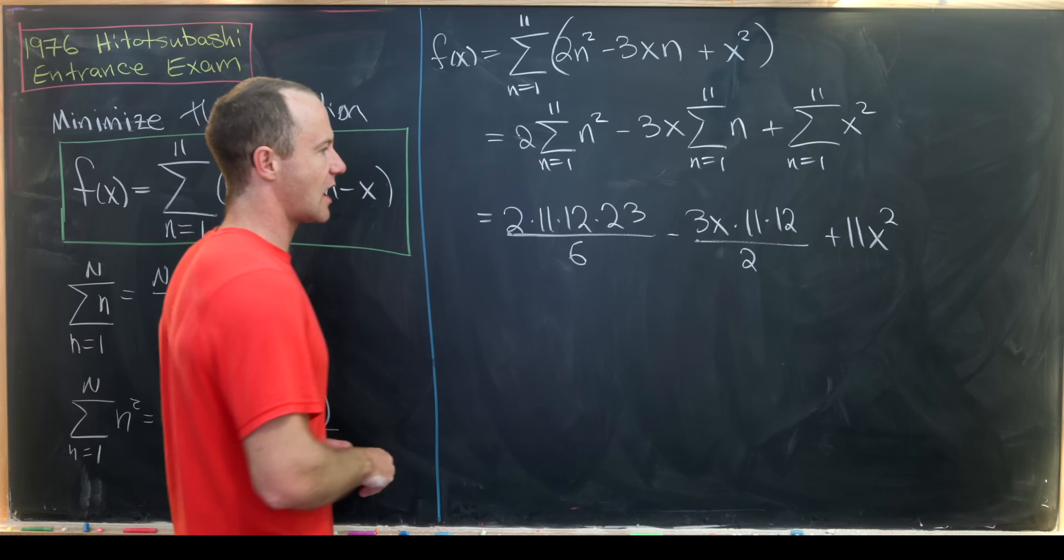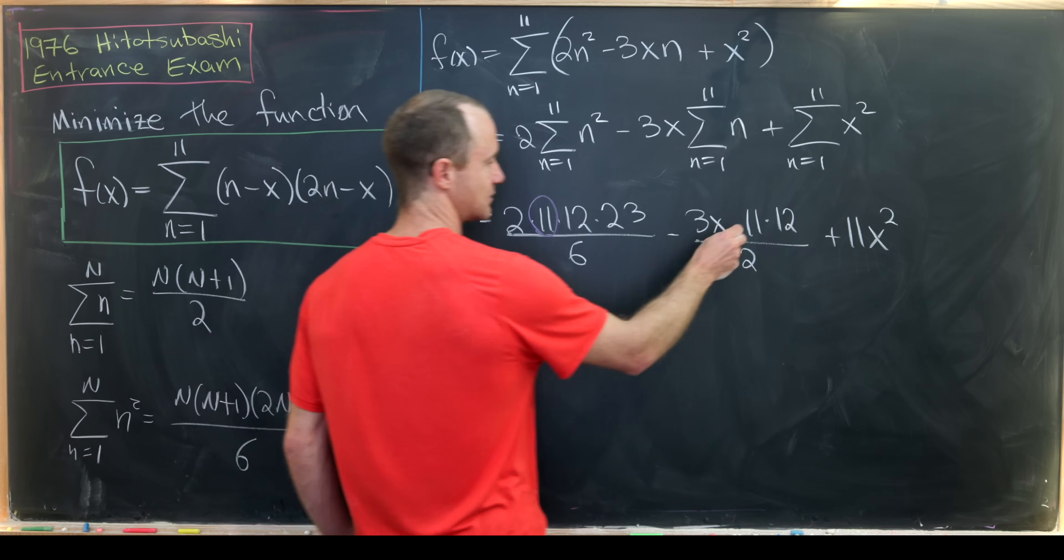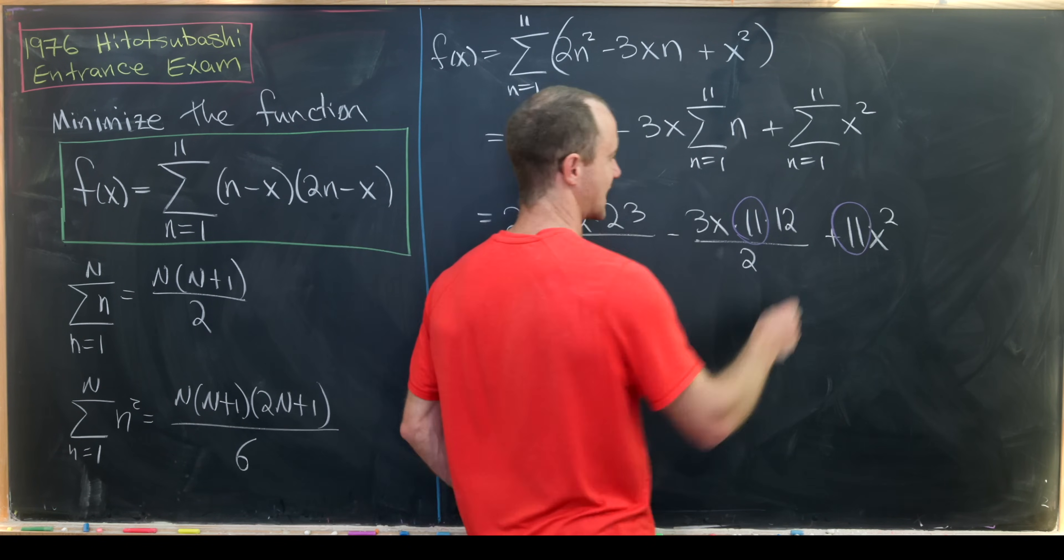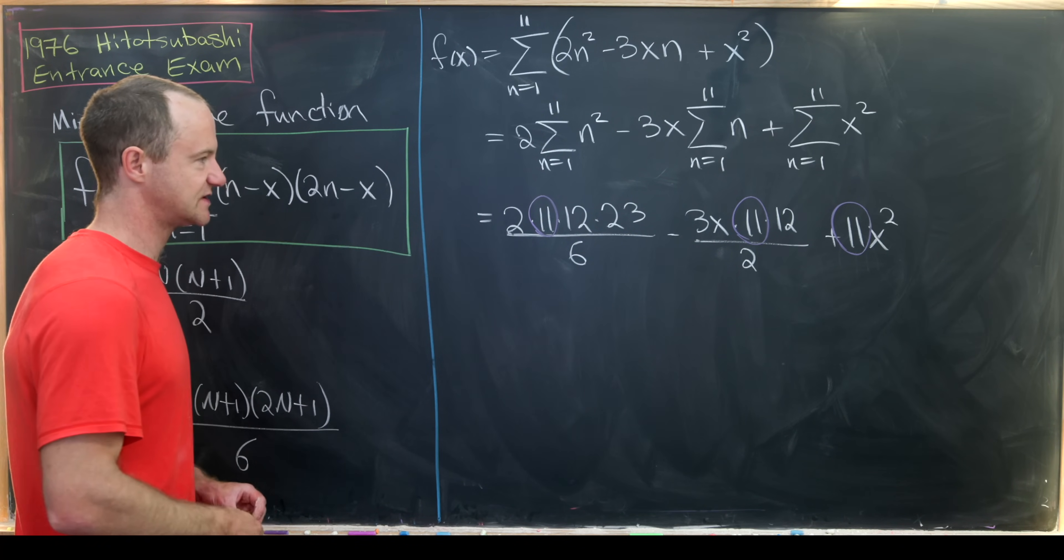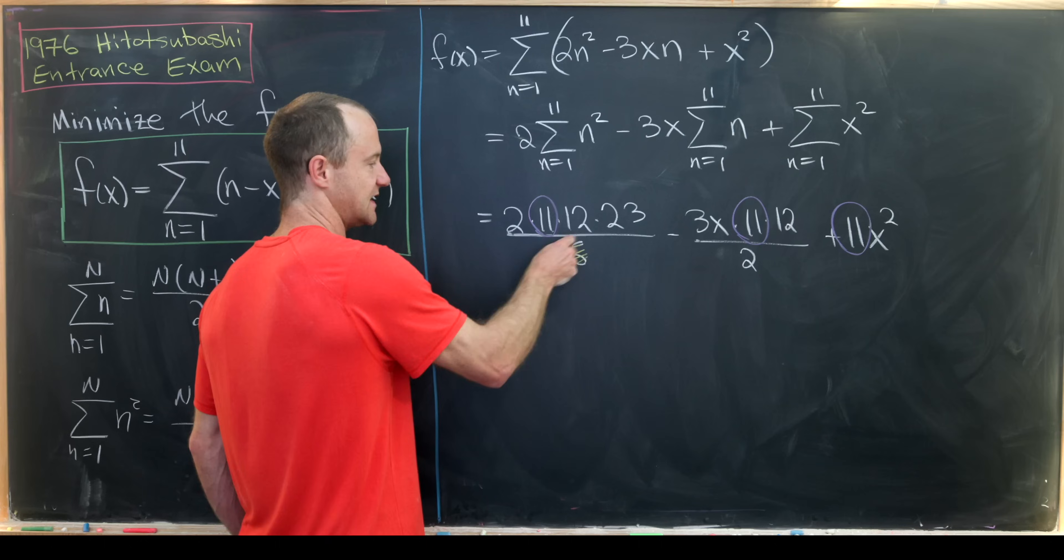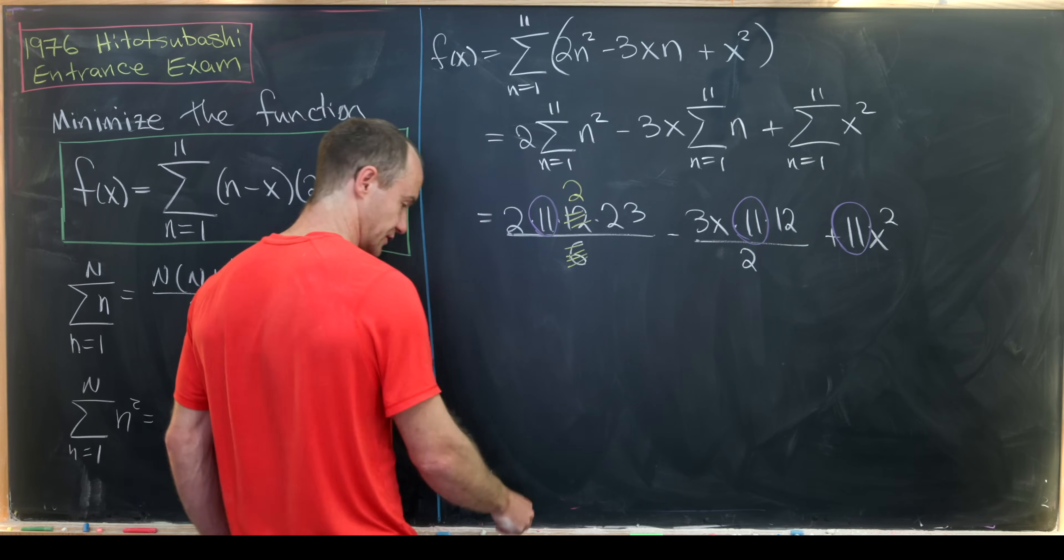Now we're going to do a couple of things at once. We're going to notice that everything has a multiple of 11 in it so we can factor an 11 out. And then we can also cancel these fractions down to something simpler. So this 6 will cancel this 12 down to a 2.